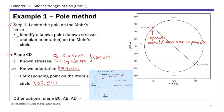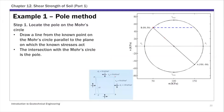Once you identify this known point — and there are other options, such as planes cB, AB, and AD, which also have known stresses and orientations — the next step is to draw a line from that known point parallel to the plane orientation. For plane cD, which is horizontal, we draw a horizontal line parallel to that plane. This 50-50 point represents the stresses on plane cD, and this horizontal line intersects the Mohr circle. That intersection is the pole — a unique pole for each Mohr circle.